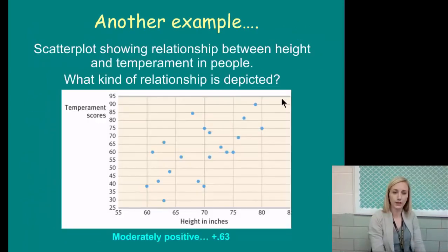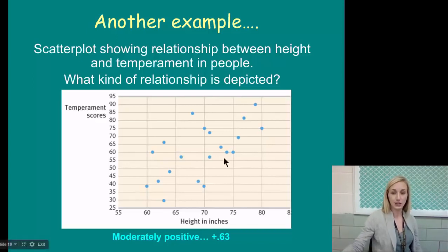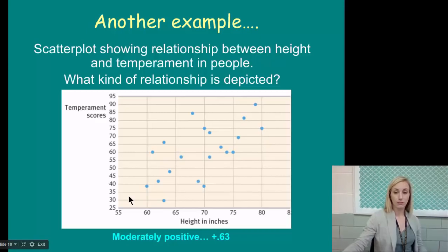Here's another real-life example. A scatterplot showing the relationship between height and temperament. Temperament is kind of like, not temper itself, but just your excitability, your ability to quickly be angered or more easygoing. So what kind of relationship is depicted in this scatter? If you have height in inches along the bottom and then temperament scores going up, as height increases, it appears that temperament then also increases. Hence, we would have a line of best fit somewhere in this general vicinity. So this would be a moderately positive correlation of 0.63.